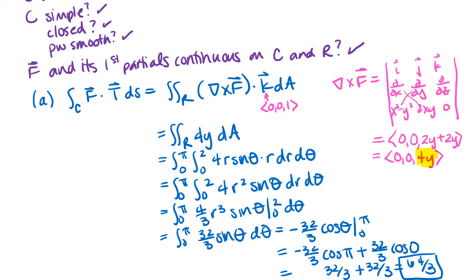When you're integrating over the region inside the curve, r goes from 0 to 2 as a variable — not fixed at 2, which would only be the outer edge of the curve. Part B asked us to find flux, so using Green's Theorem we'll write down the flux-divergence form and calculate the divergence of our vector field.